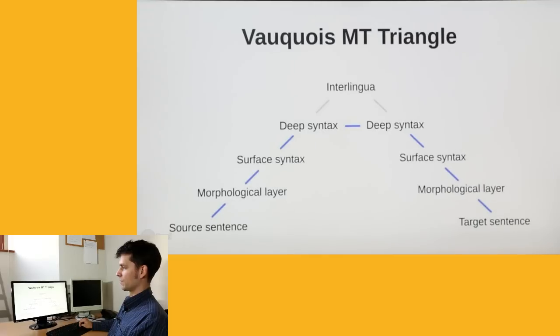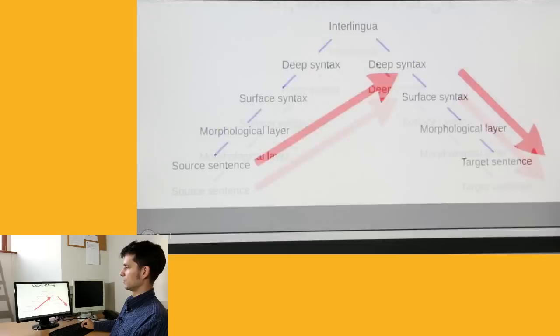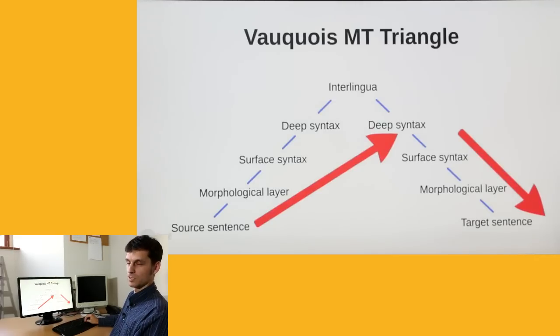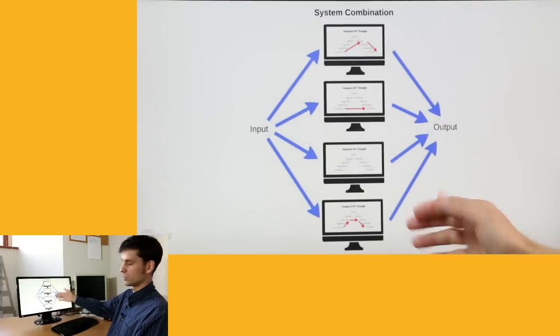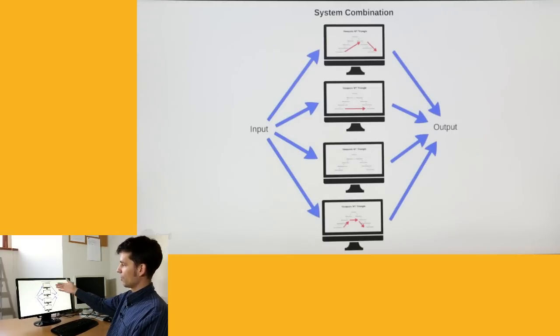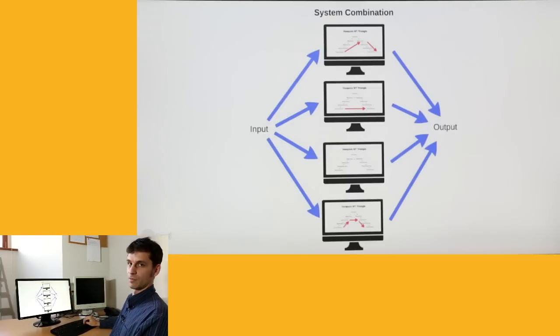Coming back to the Vauquois triangle, we can now argue whether it is better to do the transfer at the deep level of representation, or whether we want to translate directly from source to target, or whether we want to cross the level somehow. People have tried many of these approaches, and they've also found out that it's actually best to run all such systems in parallel, because each of them makes typical errors different from the other systems, and if we run all of them at the same time, we can then combine their outputs to produce the best possible translation.